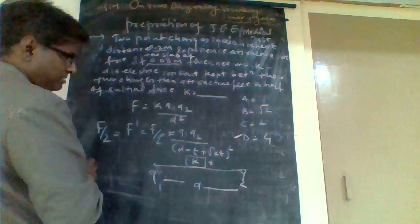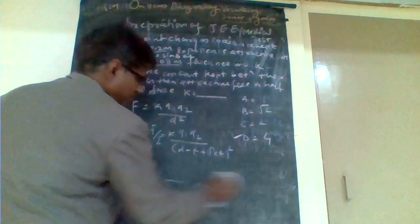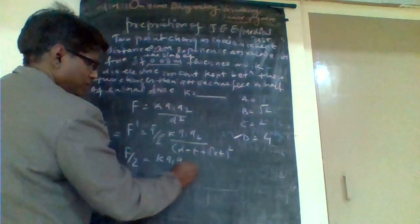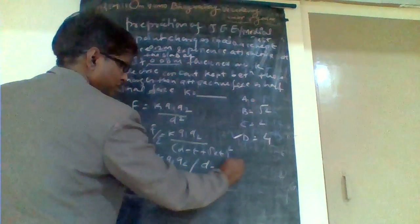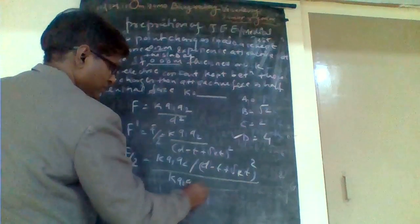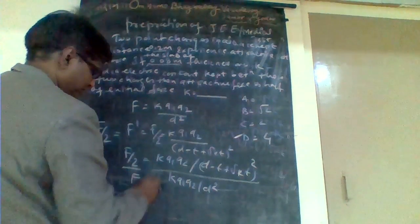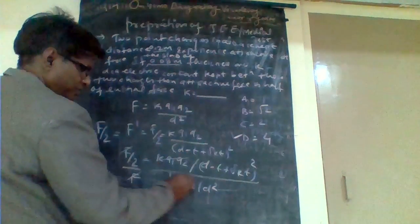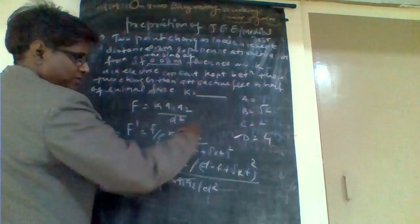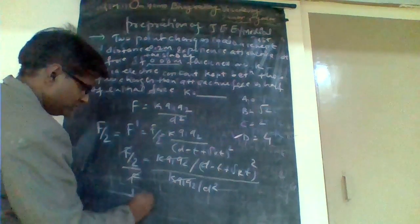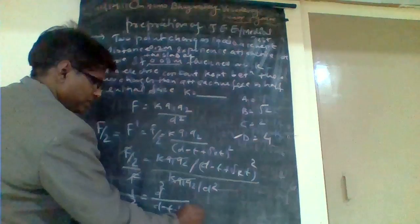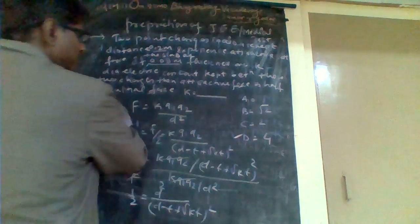Taking the ratio, we write F upon 2 is equal to k·q1·q2 upon (d minus t plus root k into t) whole squared, divided by k·q1·q2 upon d squared, upon F. The k·q1·q2 and F cancel, giving us 1 by 2 is equal to d squared upon (d minus t plus root k into t) whole squared.